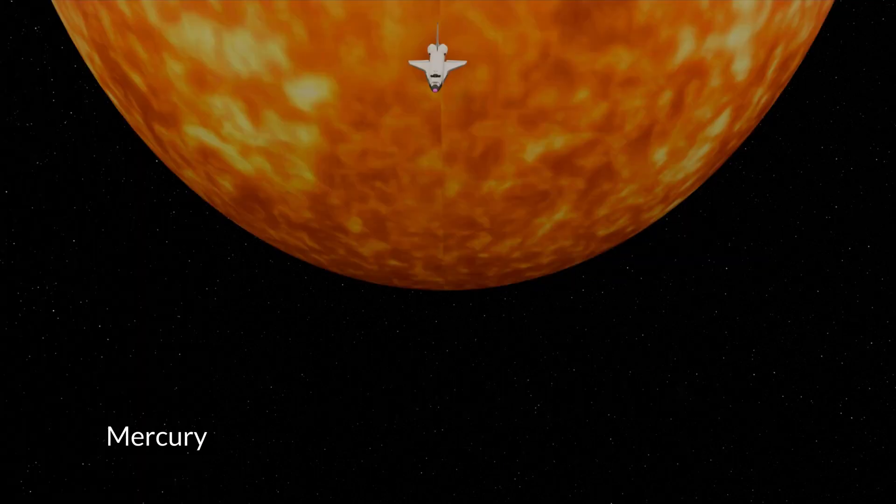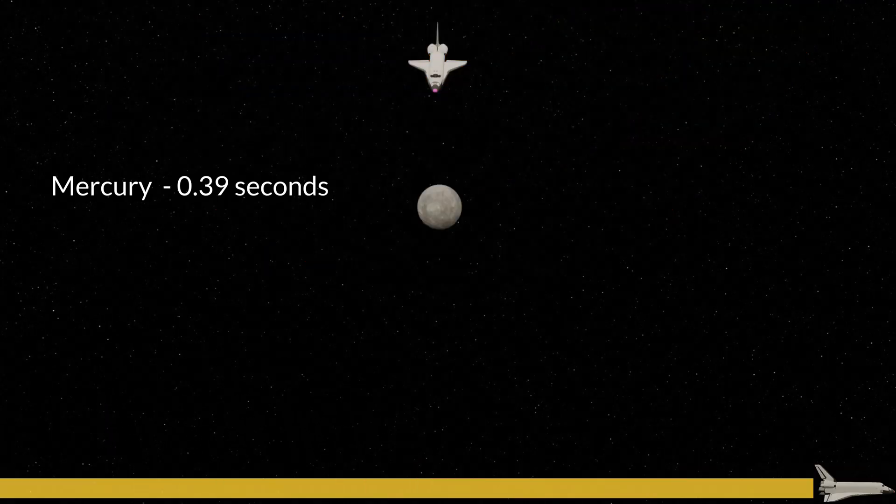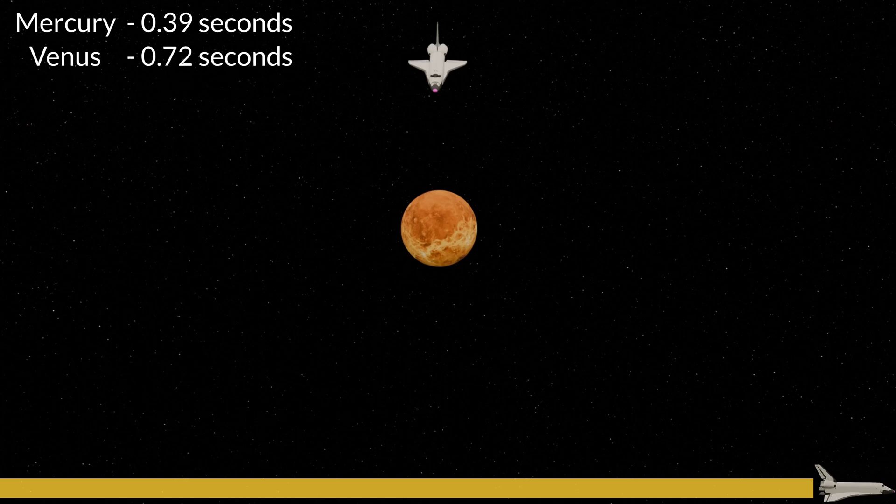Mercury is the closest planet to the Sun, and in our spaceship would take 0.39 seconds to travel to. Next is Venus, which would take 0.72 seconds to reach from the Sun. We would pass by Mercury at the 0.39 second mark.